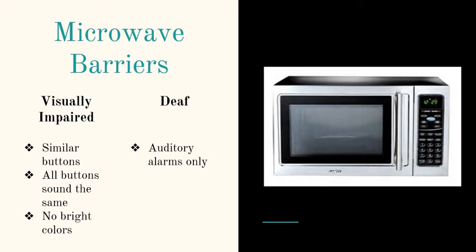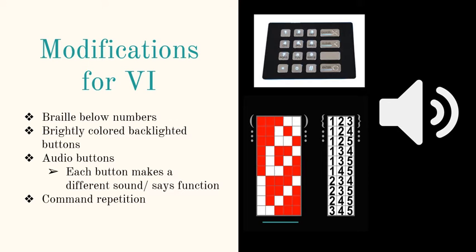Some modifications for someone with VI. Just like they have at an ATM, add braille beneath the numbers and functions. And then you can also have the buttons be backlighted for easier location.